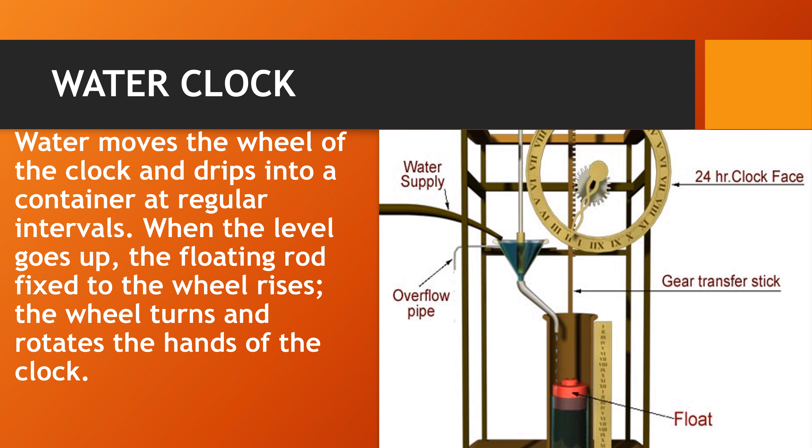Next type of clock is water clock. Water moves the wheel of the clock and drips into a container at regular intervals. You can see here in this picture also, water is supplied through this pipe and it is dripping into this container at regular intervals.